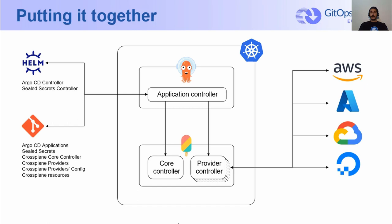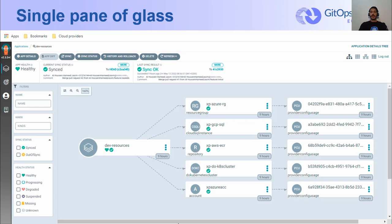This is how both Crossplane and Argo CD come together. From the left-hand side, we have Helm repositories for the Argo CD controller so that it manages itself, and also Bitnami Sealed Secrets to encrypt and decrypt the secrets mainly for Crossplane provider configs. Regarding the Git repository, we have Argo CD applications and Crossplane-related manifests. In the middle, there is the management cluster where Argo CD and Crossplane are installed. And on the right, we have the different providers where the resources are to be created. These dev resources are composed of services provided by four cloud providers, namely AWS, Azure, GCP, and DigitalOcean, all in one view.